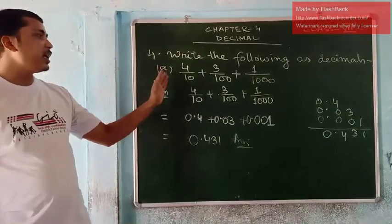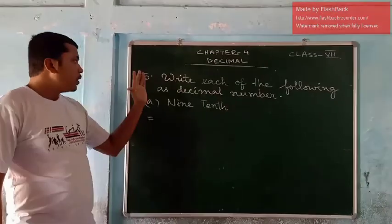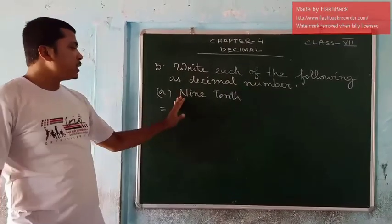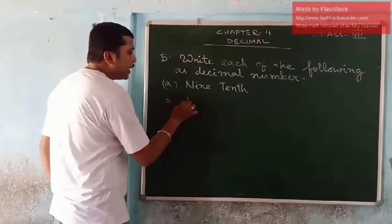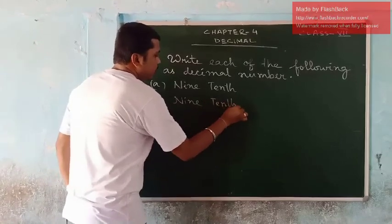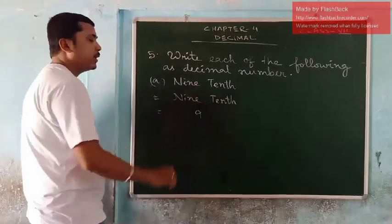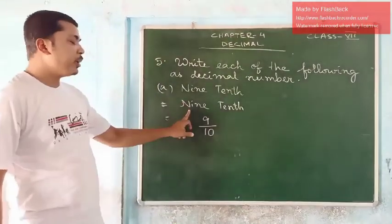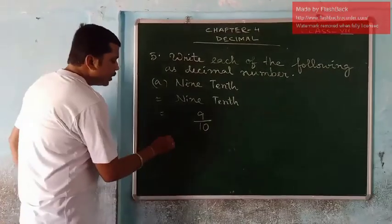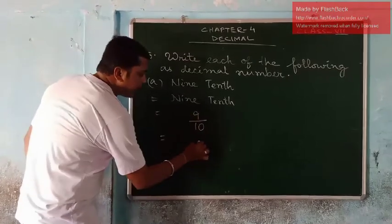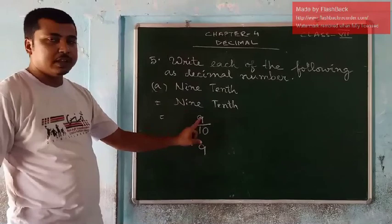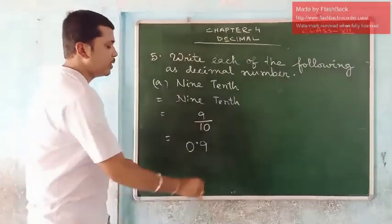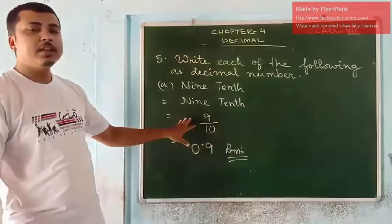Hope you have understood it. The remaining parts B, C, D — write by yourself. In question number 5, write each of the following as a decimal number. The question is 9/10 — you have to write 9/10 in decimal form. Numerator is 9, denominator is 10 with one zero. That means place the decimal before one digit. Before decimal, if you don't have any digit, simply add a zero. So your answer is 0.9. It is very easy — try the remaining by yourself.